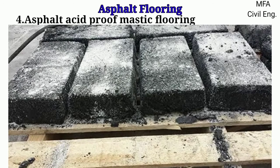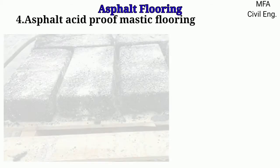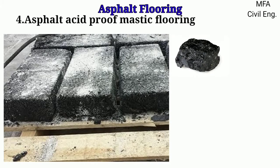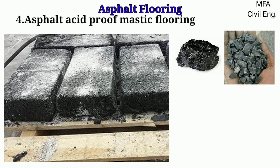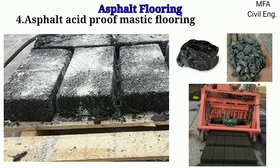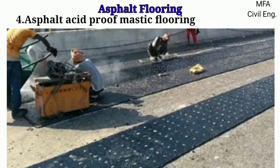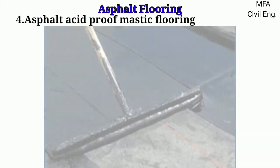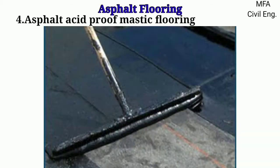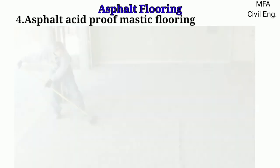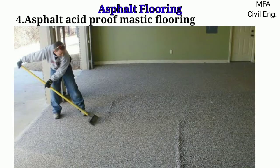In asphalt acid proof mastic flooring, acid proof blocks of asphalt are used, which are prepared from a mixture of acid proof asphalt and crushed stone aggregate taken in a mold of the block under high pressure. Initially, the asphalt block is taken out from the mold, laid on the rigid concrete base, and then coated uniformly on the surface of the block by acid proof asphalt. At last, fine sand is spread on the asphalt which is in a liquid state, before the coat gets harder.